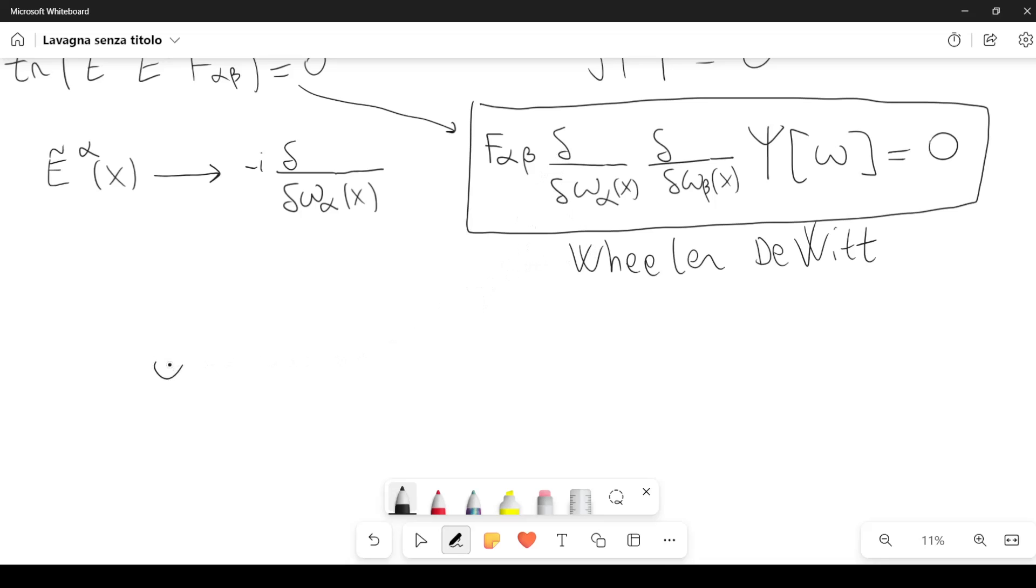And now I want to give you some hints as to why the holonomies solve this kind of functional equation. In particular, let's consider the following function psi of omega equal to the trace. So we are going to consider the trace of the holonomy. In particular, the holonomy can be written as a path ordered exponential.